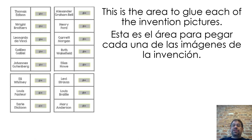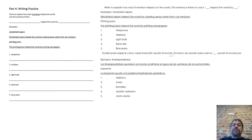This is the area to glue each of the invention pictures. Now explain how each invention helped the world. The sentence frame to use is: blank helped the world by blank. Example: windshield wipers help the world by clearing away water from car windows. Printing press: the printing press helped the world by printing newspapers.